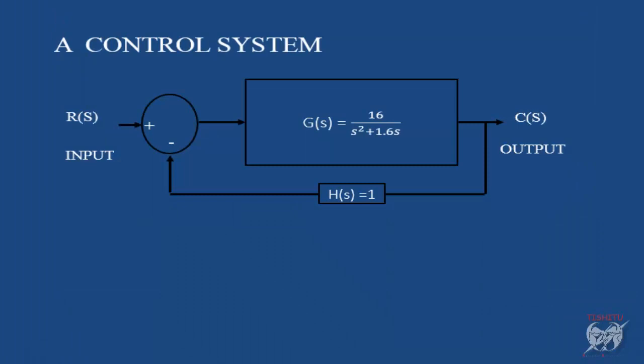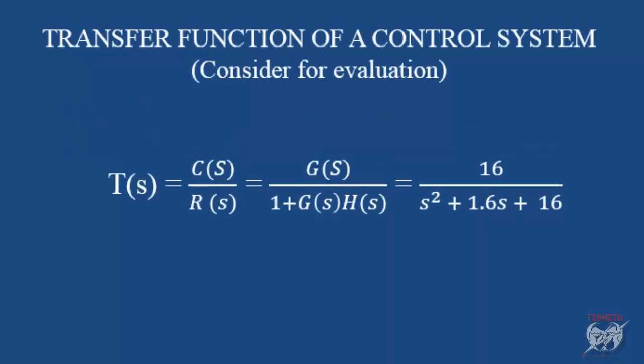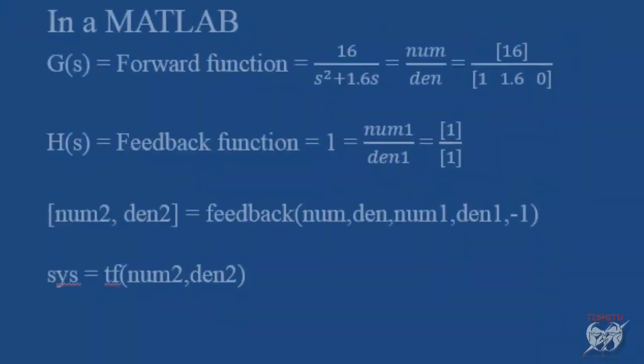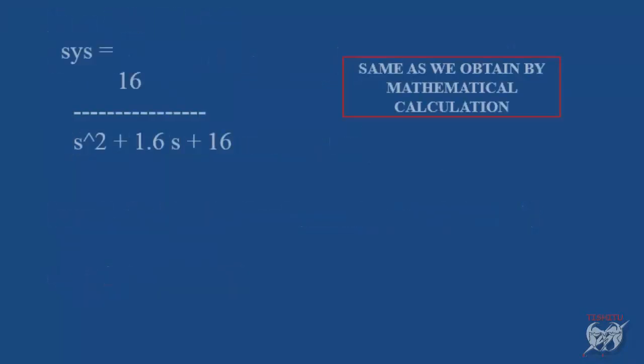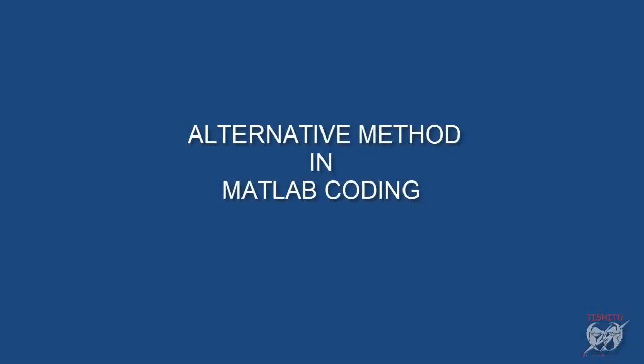First we have a quick review of previous class as we assume this as a typical example of control system for our study and then evaluate transfer function of it using standard formula. Then we learn MATLAB coding on the concept of numerator and denominator coefficient of G(s)H(s) and use some command to evaluate transfer function and then finally use step command to obtain step response. For more detail of previous class go to the link which is provided in description box.